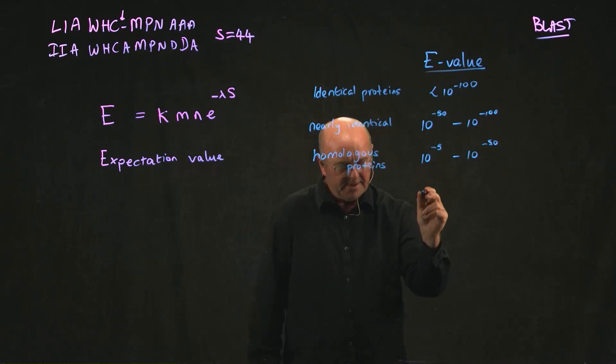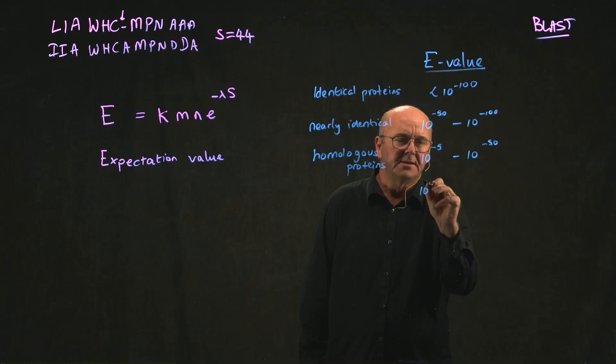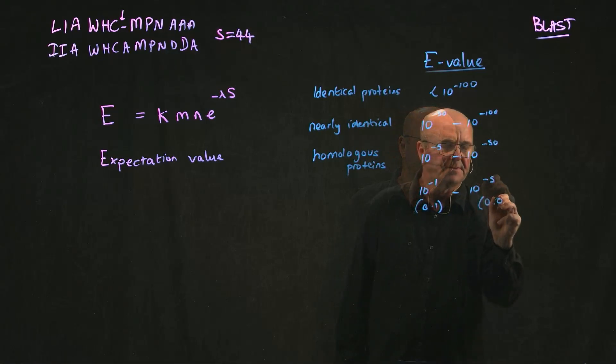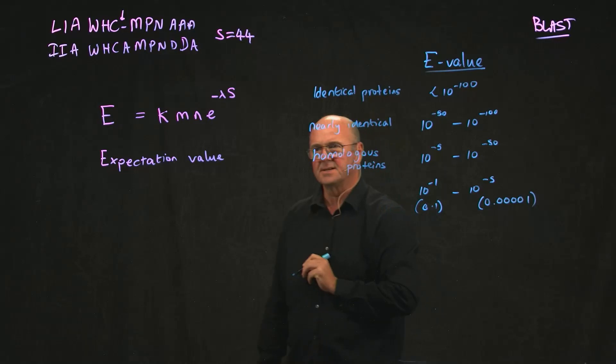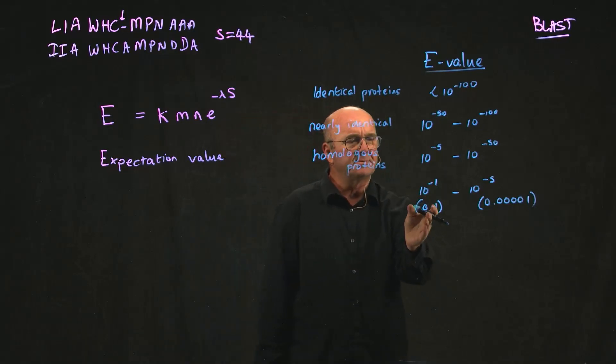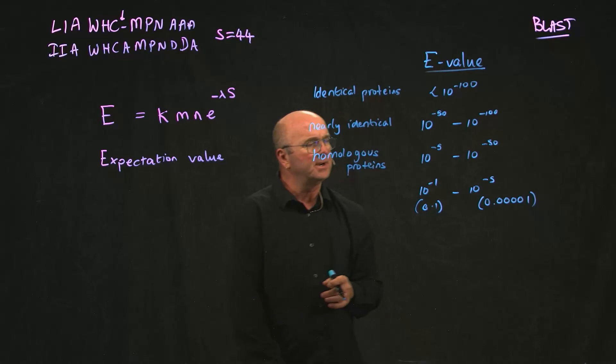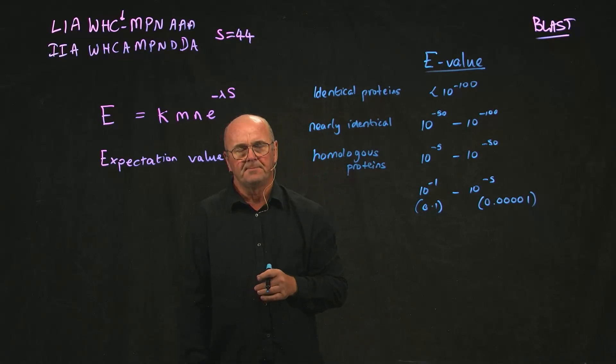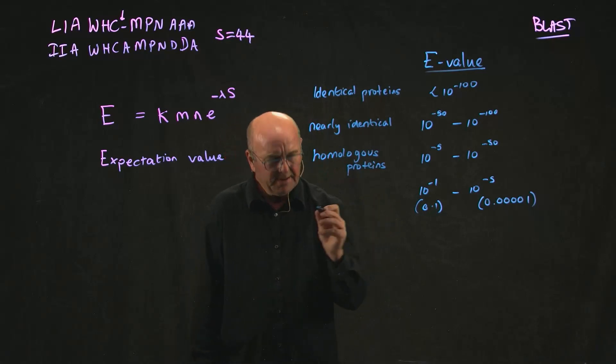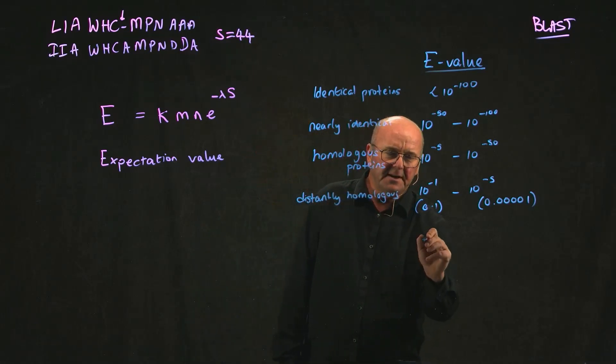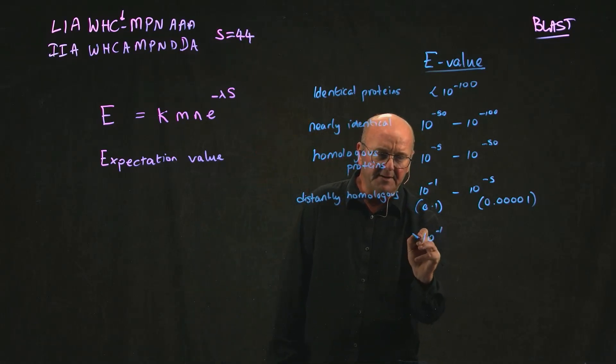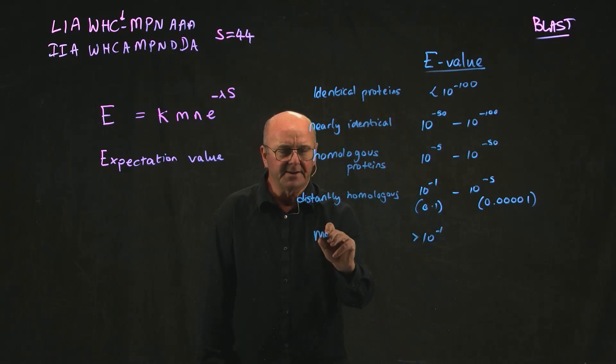If you have an e value of about 10 to the minus 1, so 0.1, to 10 to the minus 5, so if you have an e value between about 0.1 and 0.00001, then they're kind of distantly homologous. And if you have an e value above about 10 to the minus 1, then it may be random.